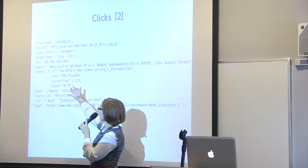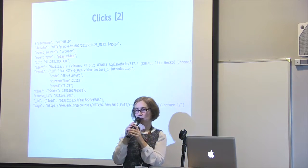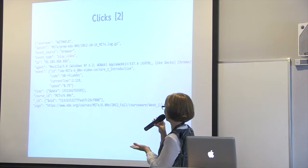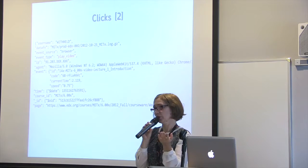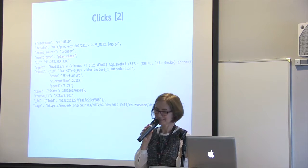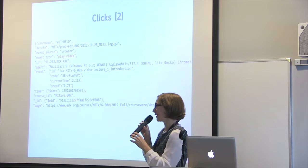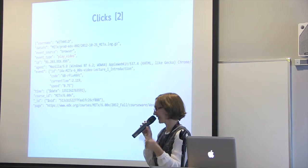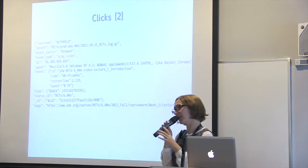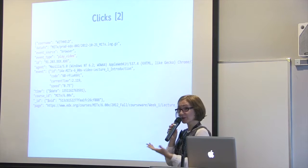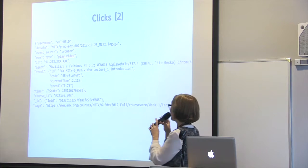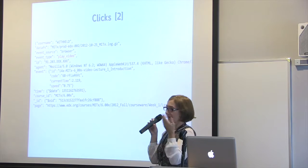There is interesting data about the speed at which you're watching the video. This particular student is at speed 0.75. If you've done MOOCs, sometimes we go to 1.5 or 2 because we think the instructor is going too slow, but there are also students who need to slow down. The IP address might help explain this — a reverse lookup can reveal that this student is not a native speaker, so slowing down helps comprehension.